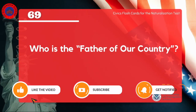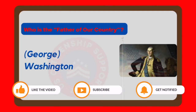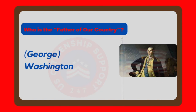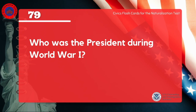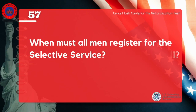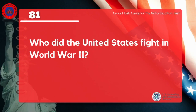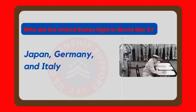Who is the father of our country? George Washington. Who was the president during World War I? Woodrow Wilson. When must all men register for the Selective Service? At age 18. Who did the United States fight in World War II? Japan, Germany, and Italy.